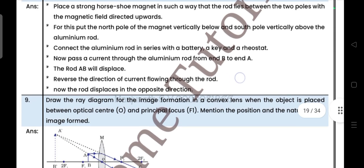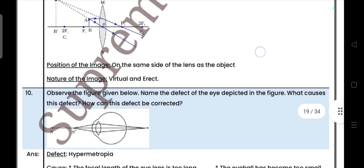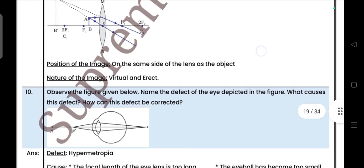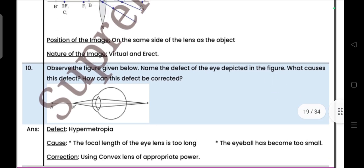Next, draw a diagram for the image formation of convex lens when an object is placed between optical center and principal focus. Mention the position and nature of the image. Nature of image is virtual and erect. Position is on the same side of the lens as the object. Next one, observe the given figure, name the defect of an eye. What causes this defect? How can this defect be corrected? So defect is hypermetropia. Causes, the focal length of an eye lens is too long and eyeball has become too small. Correction, using convex lens of an appropriate power.